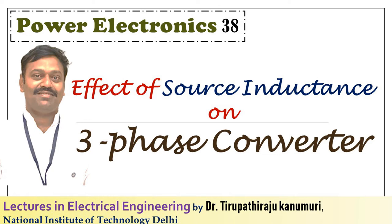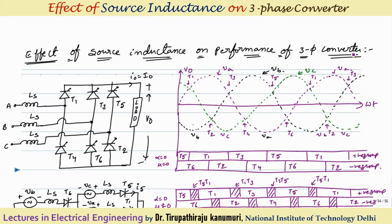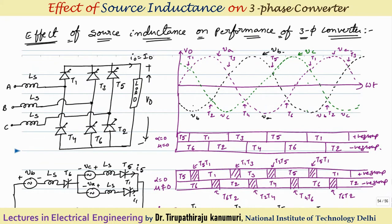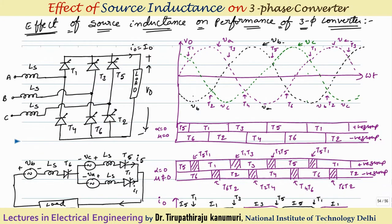Today we are going to discuss the effect of source inductance on the performance of three-phase converters, followed by deriving a general formula for calculating this effect in any type of converter. Starting with the three-phase full converter, we have seen in the last lecture that at any time one thyristor from the upper positive group and one from the negative group will conduct simultaneously, so the output voltage equals the line voltage between two phases.